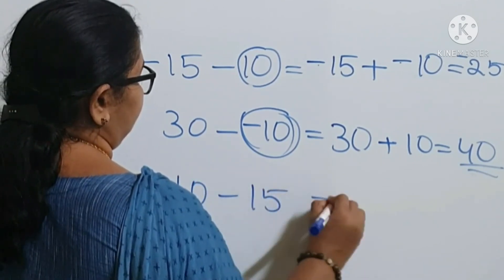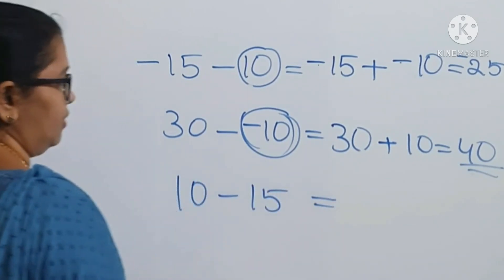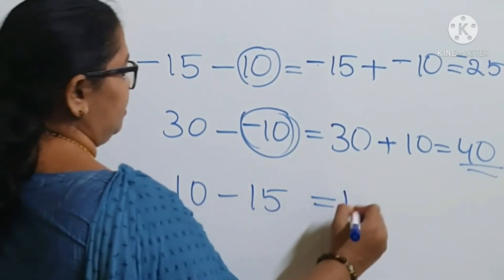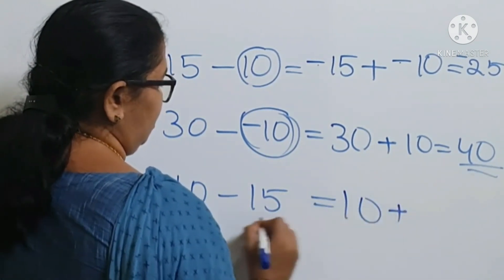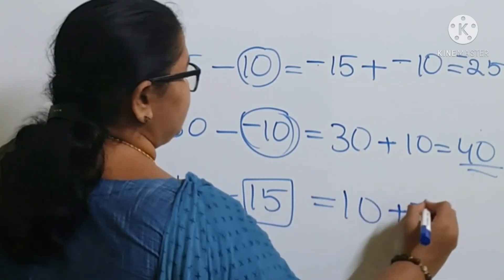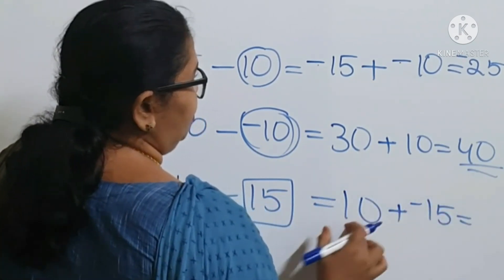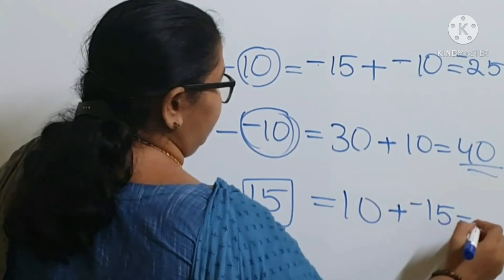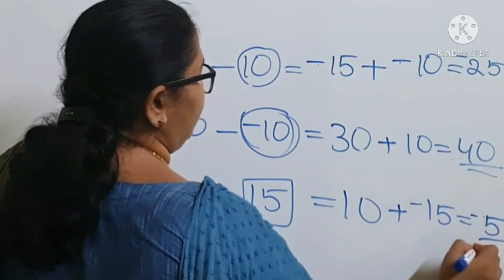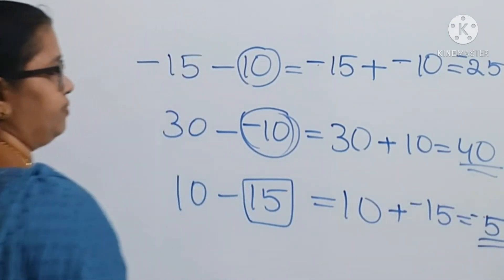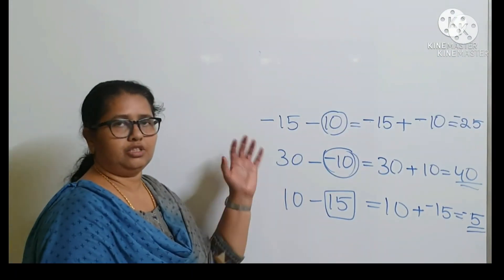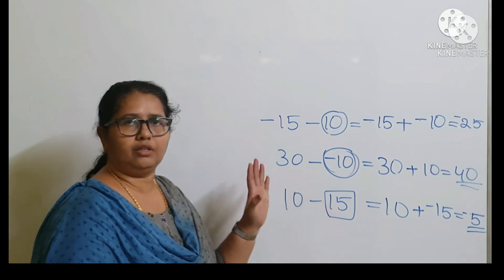One more example: 10 minus 15. This becomes 10 plus additive inverse of 15, which is minus 15. We have a positive and a negative integer, so we subtract them: the result is 5, and the sign of the bigger integer gives minus 5. So subtraction is very easy — change it to addition and apply the addition rules.